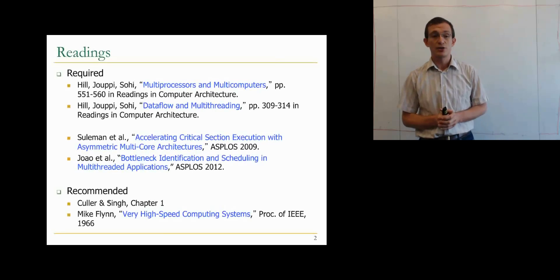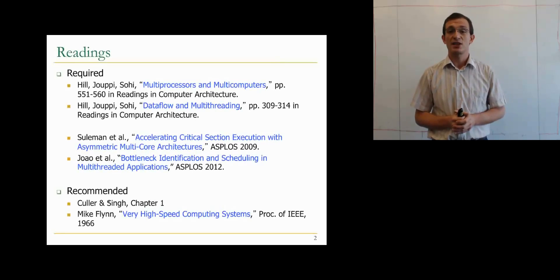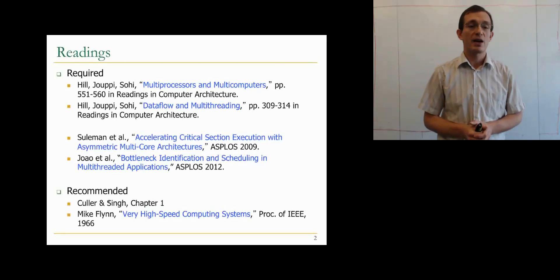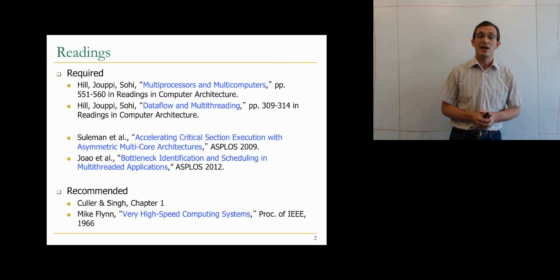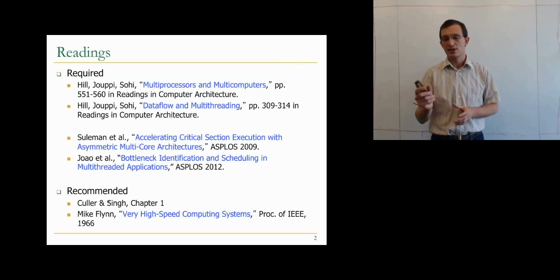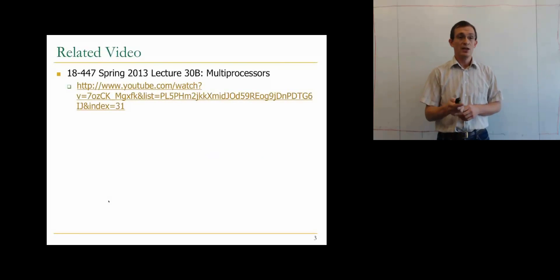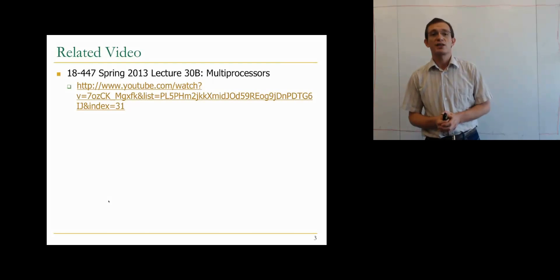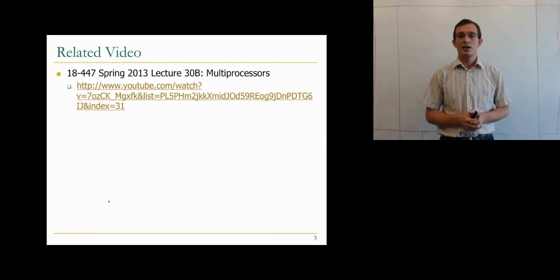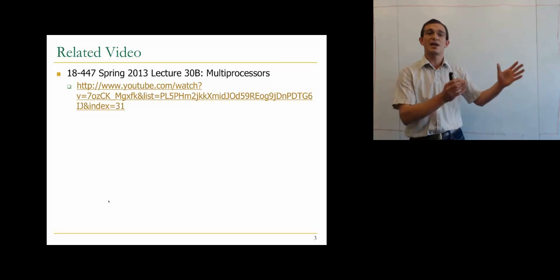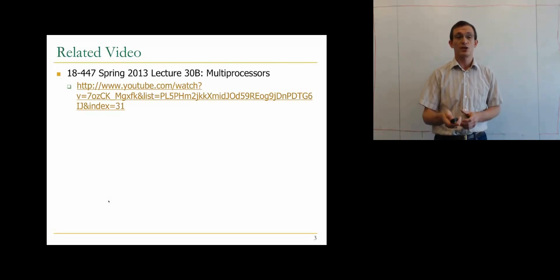There are also recommended readings: the Culler, Singh, and Gupta paper — the first chapter provides information about what parallel computing is all about. We're also going to touch on Mike Flynn's 'Very High Speed Computing Systems' paper, which categorizes computing systems into four different categories and is still relatively useful today. There's also a related video recorded in spring 2013 in computer architecture class 447, which talks about multiprocessors and covers similar material.